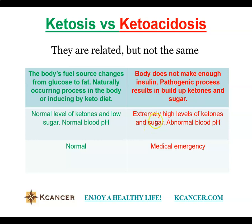However, during ketoacidosis, there are high levels of ketones and sugars, but all the sugars cannot be consumed, so the body is constantly signaled to break down fat and create large amounts of ketone bodies. This results in the blood becoming acidic and the pH of the entire body can reach dangerous levels.